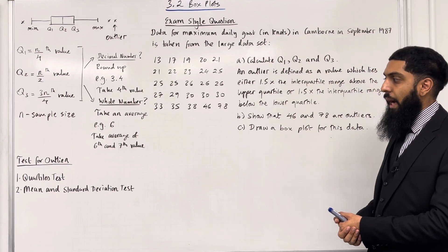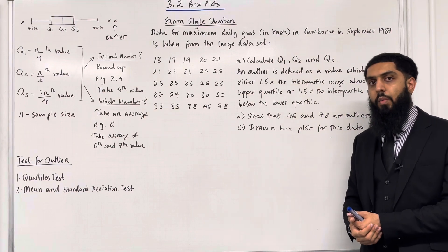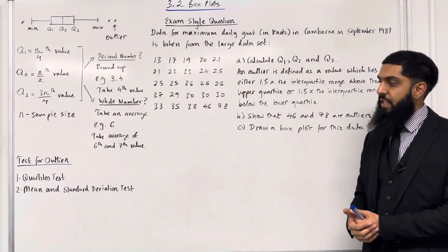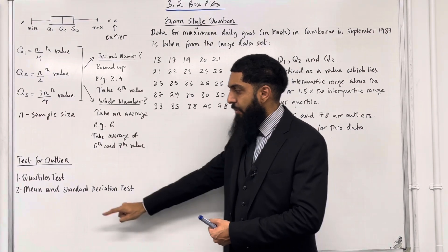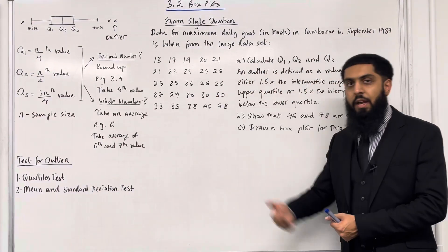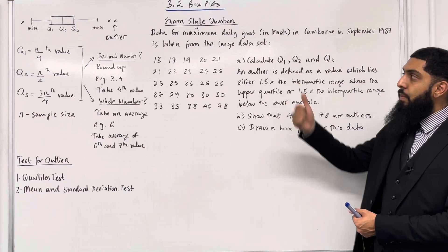Test for outliers. This is covered in my teaching video 3.1. There are two different tests: the quartiles test and the mean and standard deviation test. These are the key facts of 3.2 box plots.